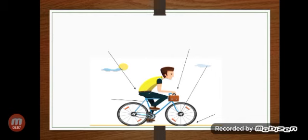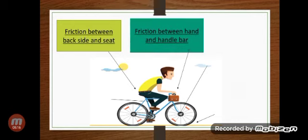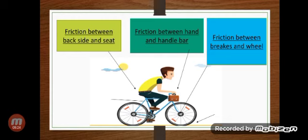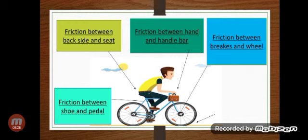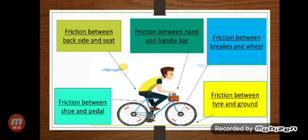When we are riding a bicycle, we can observe that there is friction between backside and seat, there is friction between hand and handlebar, there is friction between brakes and wheel, there is friction between shoe and pedal, there is friction between tire and ground. You can find this activity in your book on page number 63.